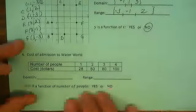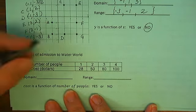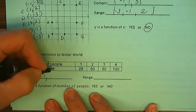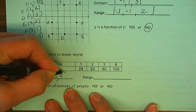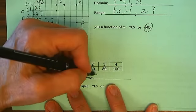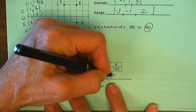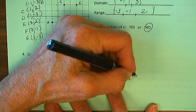Unit 1B, Problem 4. My domain is 1, 2, 3, and 4. My range is 28, 50, 80, and 100.